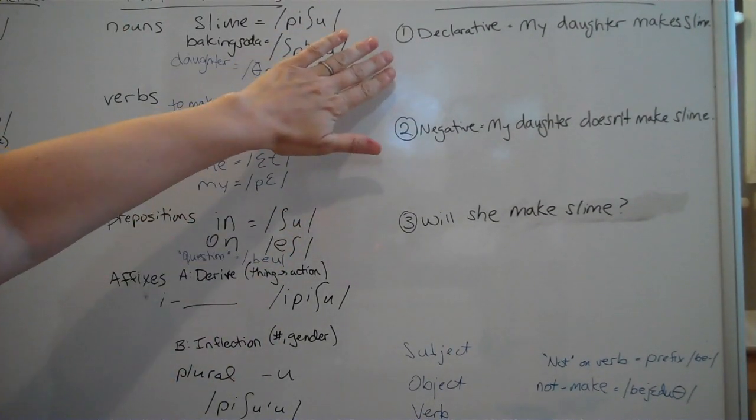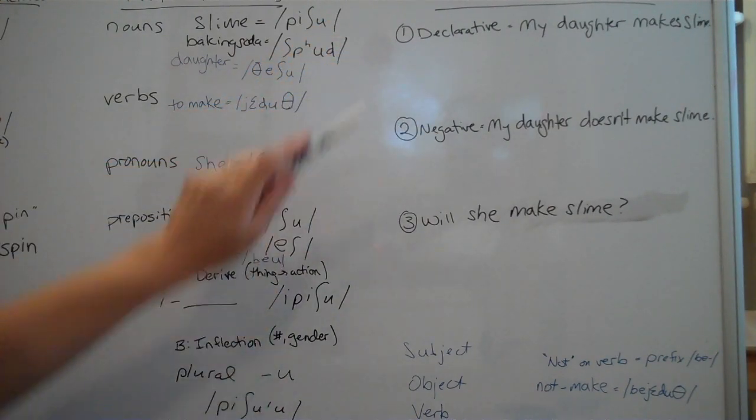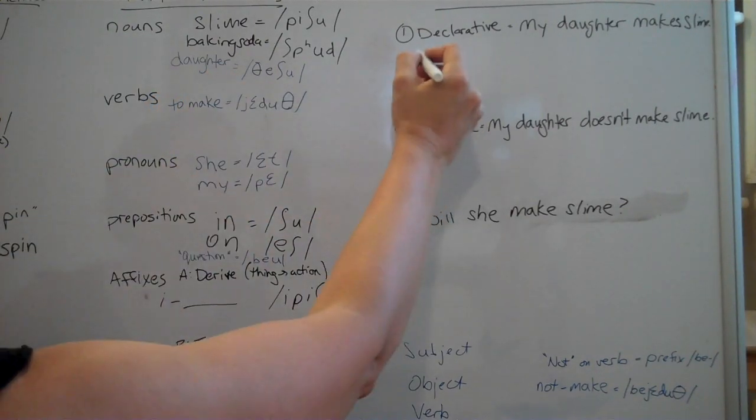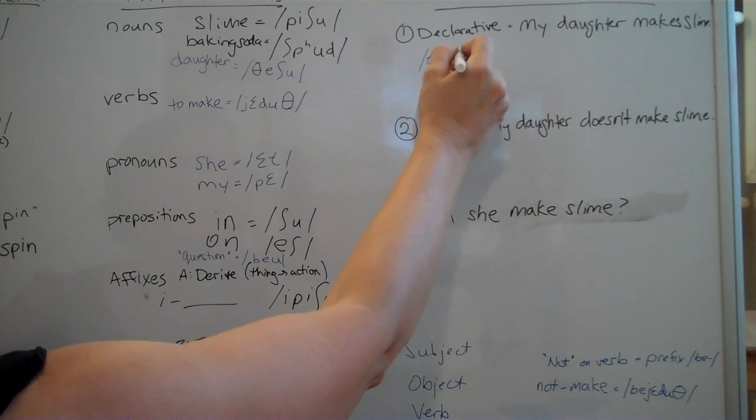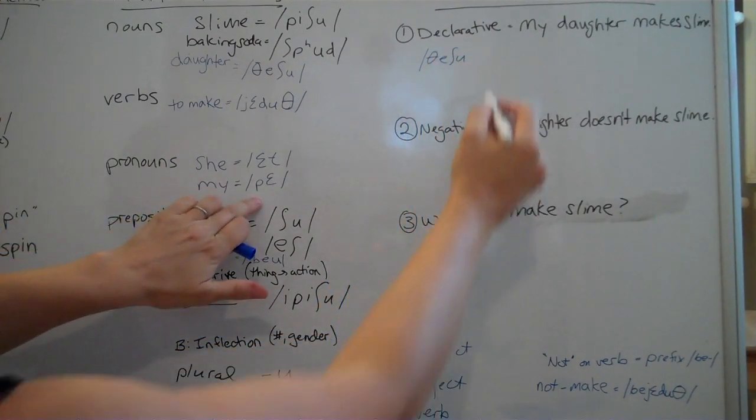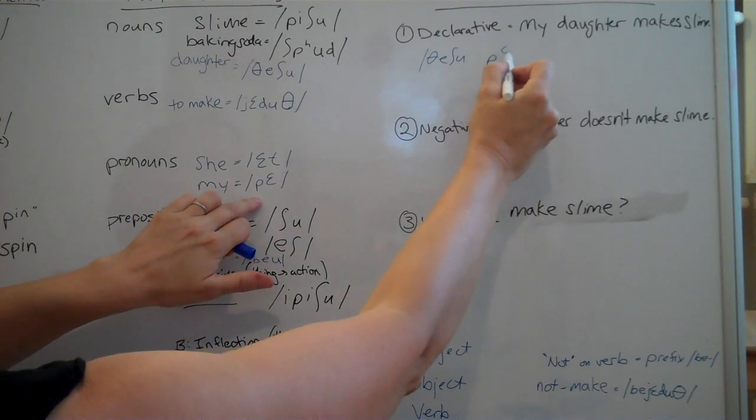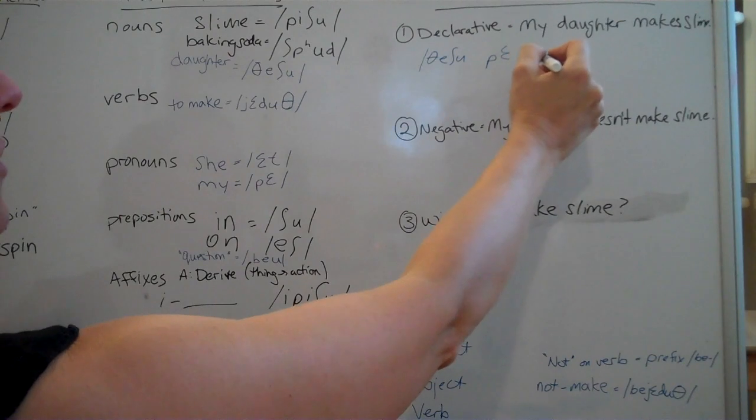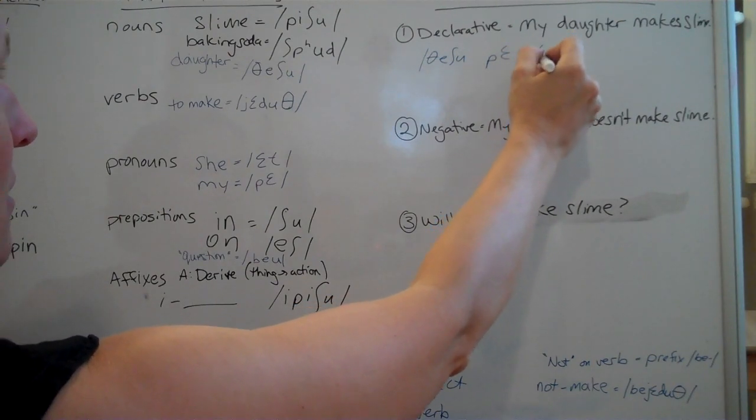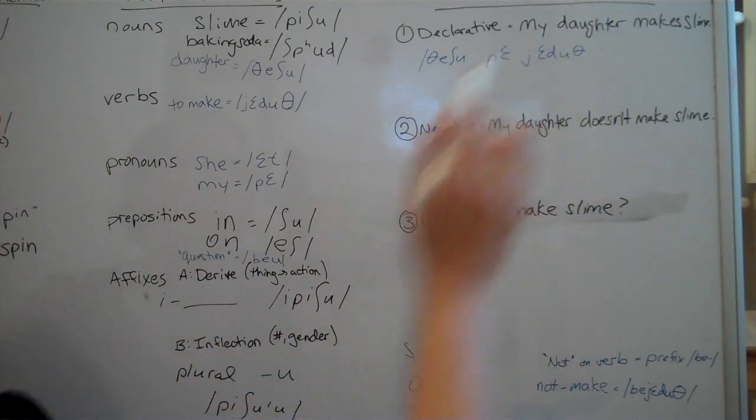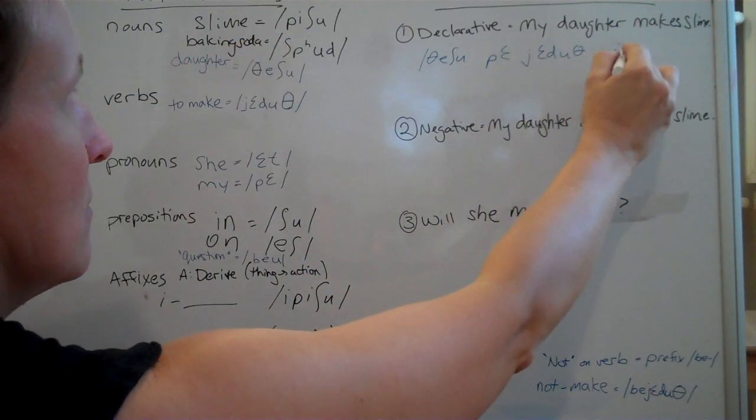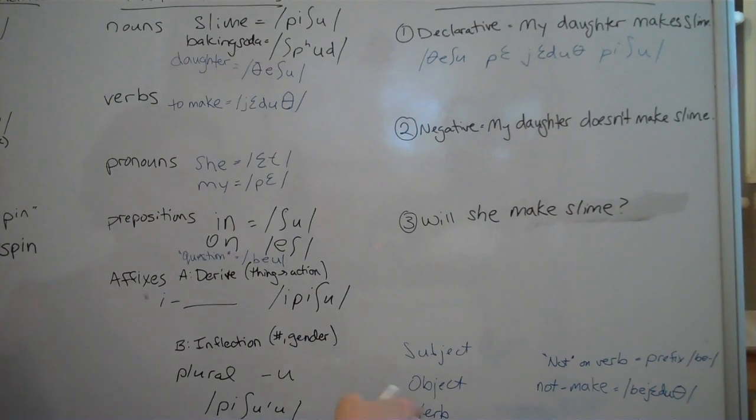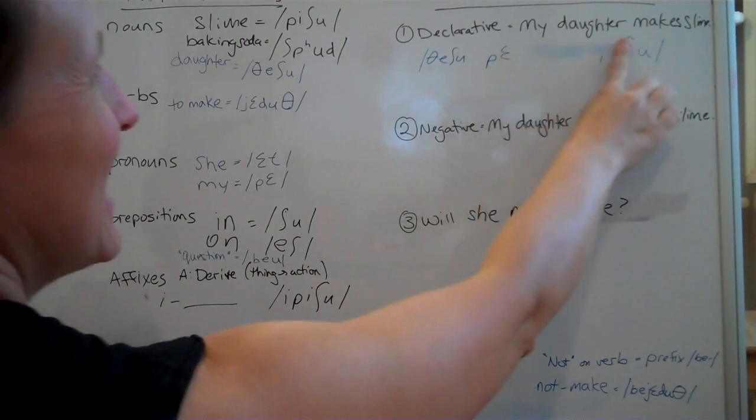So my first declarative sentence I'm going to do is, my daughter makes slime. So to write that in my language, I am going to do, start with daughter. So, Feishu, Feishu, Mai, Pe, so Daughter Mai makes jeduth slime, Peishu. So, Daughter Mai makes slime. And I actually changed that from what I wanted my word order to be. So, I'm going to change that really quick.